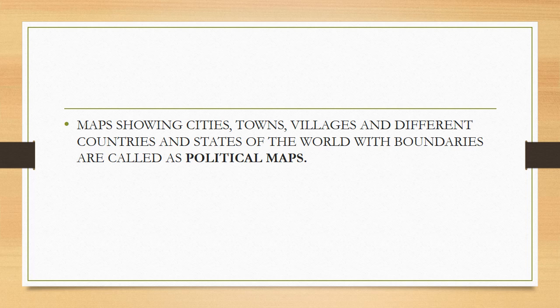The physical map and the political map of the same state have a difference. In the physical map, more importance is given to mountains, lakes, oceans, and everything. But in the political map, suppose the map of India is drawn — major cities like Delhi, Bombay, Kolkata, Chennai, and every small town, village, and also boundaries are shown. India is sharing boundaries with Pakistan, Nepal, China, and all these boundaries will also be shown in a political map.